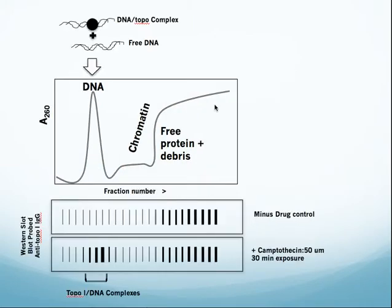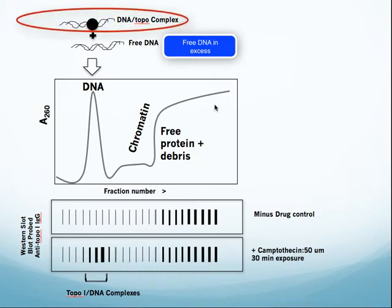If you look at the actual composition of the DNA fraction, you would find a mass excess of free DNA and a small quantity of DNA topo-complexes associated with this DNA fraction.